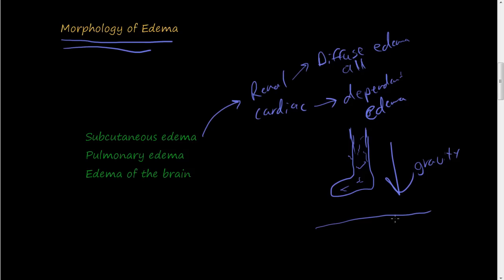If someone is lying down in a bed, they start getting edema right here, like on their sacrum or on their buttock area. That's because gravity is pulling it down and it accumulates right here. That's called dependent edema.